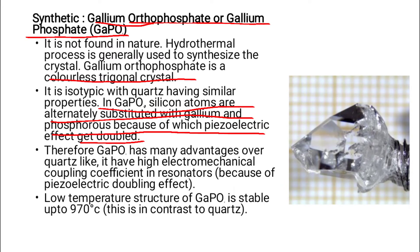In GAPO4, silicon atoms are alternately substituted with gallium and phosphorus — gallium, then silicon, then phosphorus, alternating — because of which the piezoelectric effect is doubled. Therefore, GAPO4 has many advantages over quartz, including a high electromechanical coupling coefficient in resonators due to the piezoelectric doubling effect.